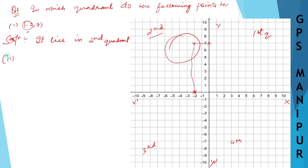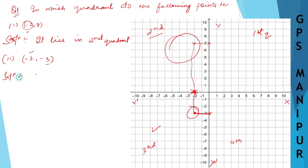Roman number 2 is the point (-2, -3). Minus 2 is for x, so it is here on the negative x side. Minus 3 is for y, so it is here on the negative y side. Where these two meet, this point lies in the third quadrant.